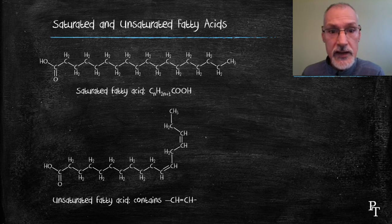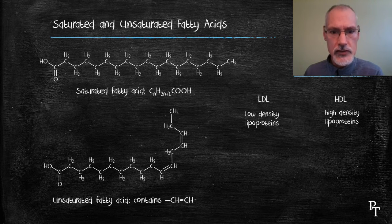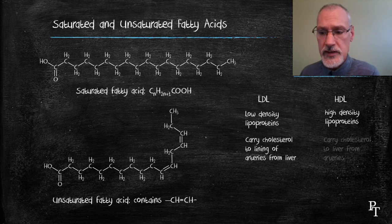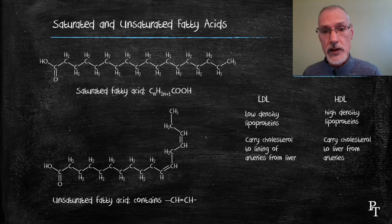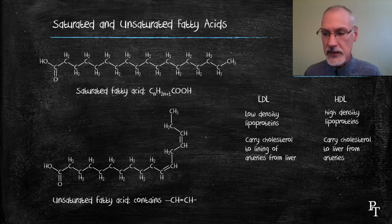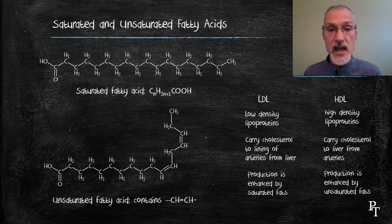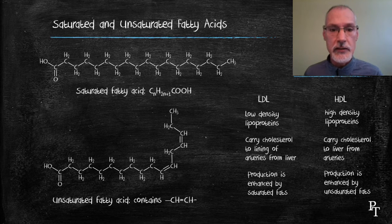Consider blood chemistry for a moment. Blood contains two what they call lipoproteins: a high-density lipoprotein and a low-density lipoprotein, and these have opposing functions. The low-density lipoprotein carries cholesterol from our liver to our arteries to help protect and insulate them. Simultaneously, the high-density lipoprotein carries an excess of cholesterol back from the arteries to the liver. The production of these lipoproteins depends on the foods we eat. The low-density lipoprotein is enhanced by the consumption of saturated fats, so if we consume more saturated fats, we will essentially be carrying more fats from our liver to our arteries.